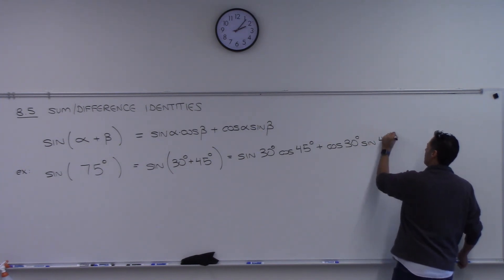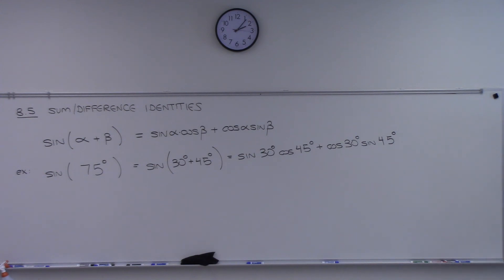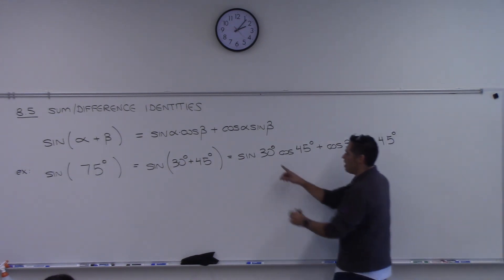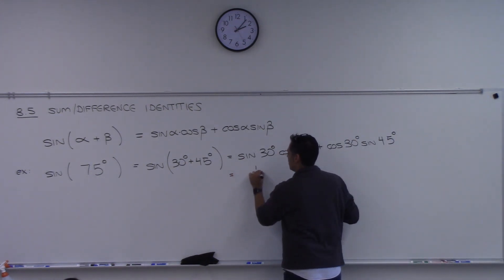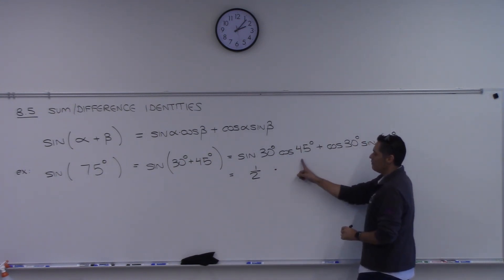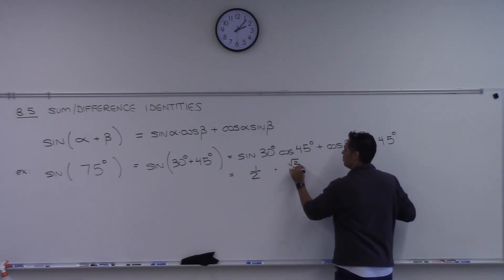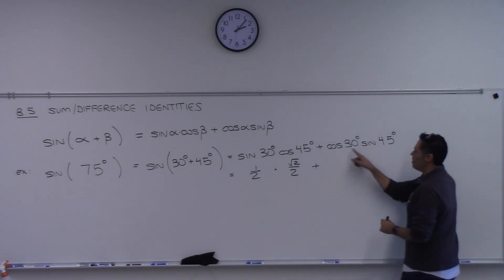Plugging in: sine of 30 is one-half, times cosine of 45 which is root two over two. Plus cosine of 30...